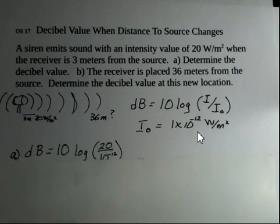So we have the numbers we need, we go ahead and do this direct calculation. We have 10 log, I is 20, I-naught is 10 to the minus 12. What's your first step here? Do you apply the log to the 20 and then the log to 10 to the minus 12?